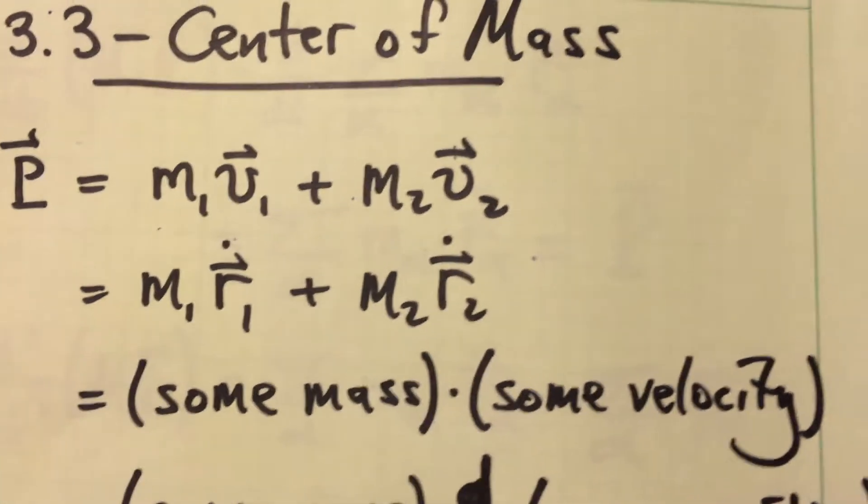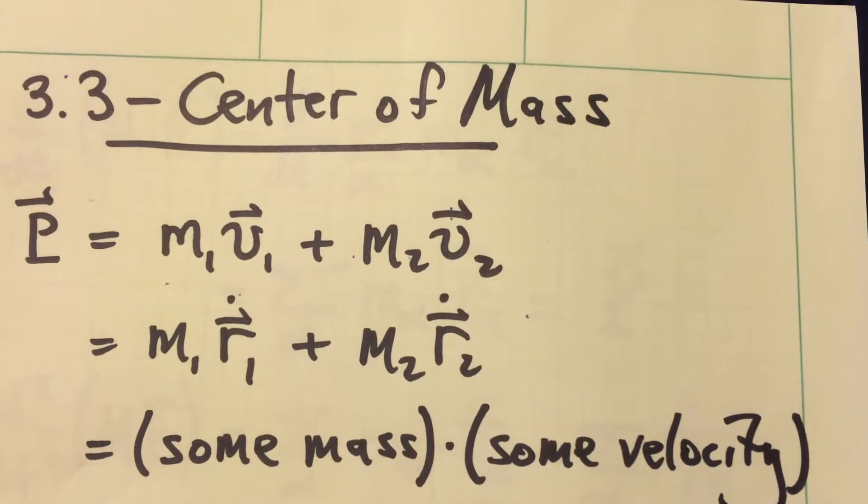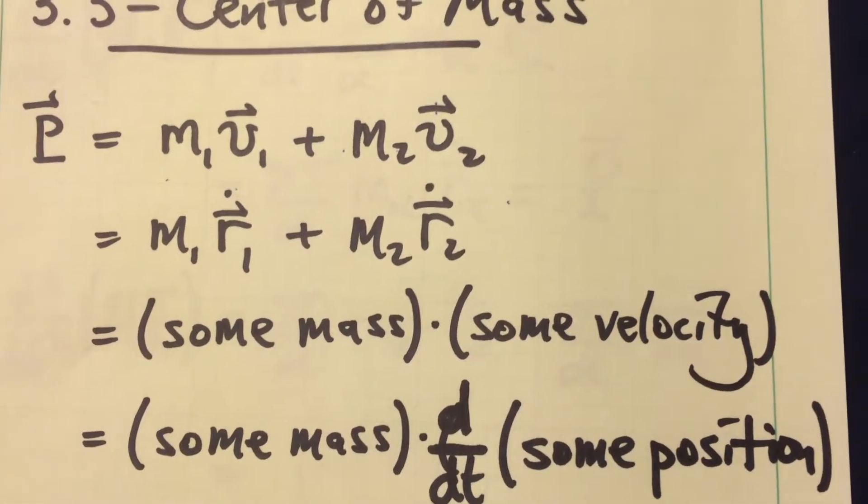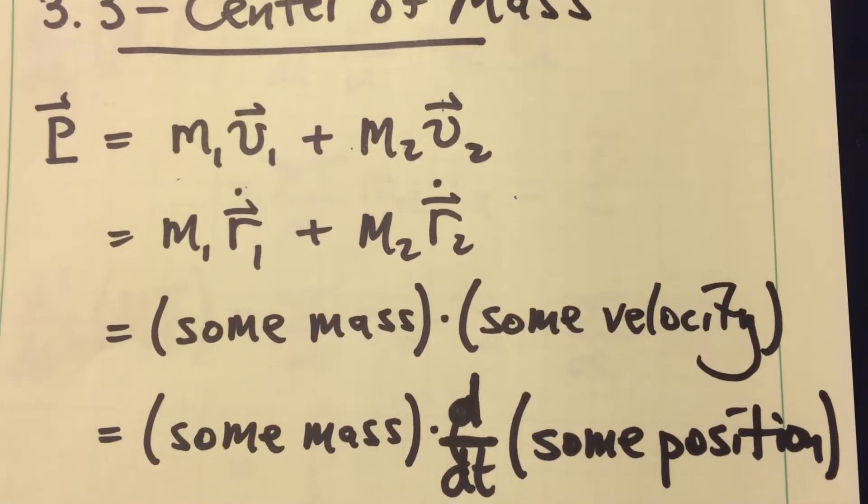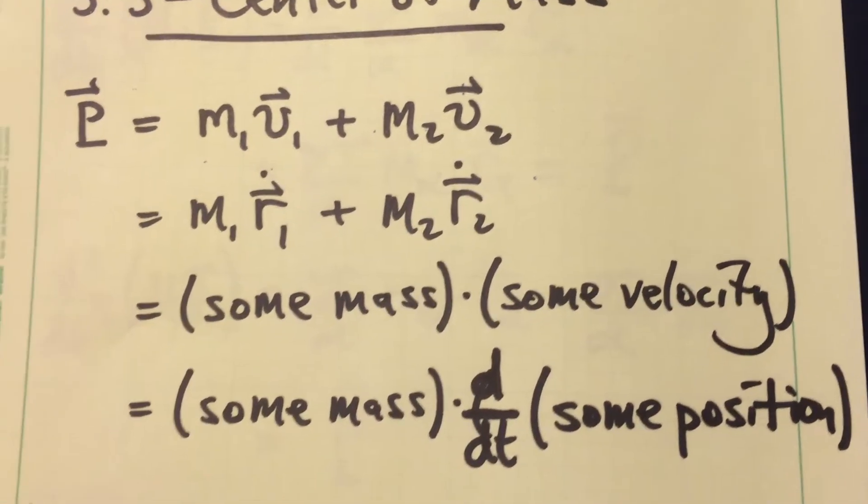Now, it would be nice if we could express this total momentum of the system as the product of some mass times some velocity. Or in other words, the product of some mass times the time derivative of some position. Well, it turns out that that position is going to be the position of the center of mass for our system.